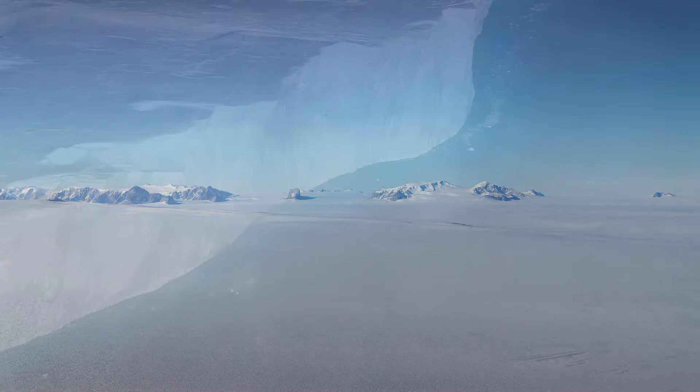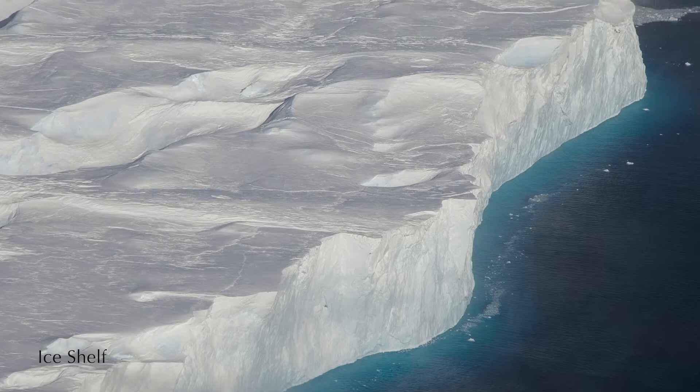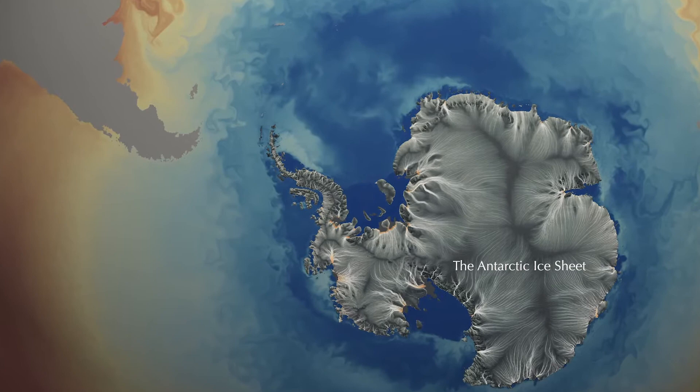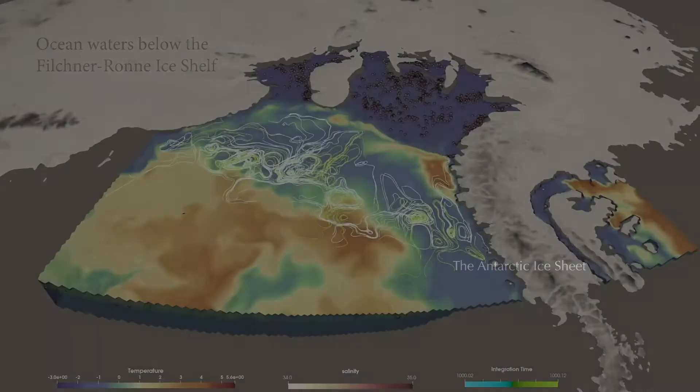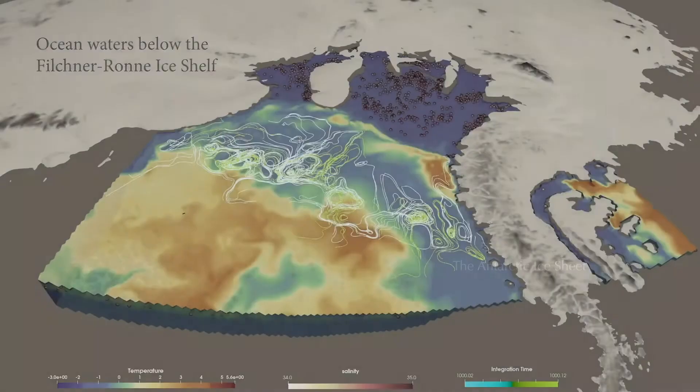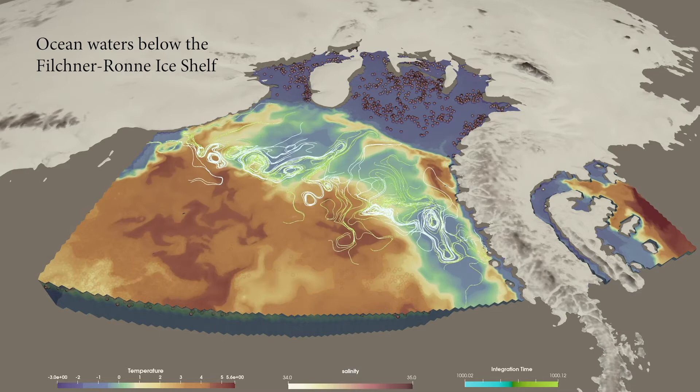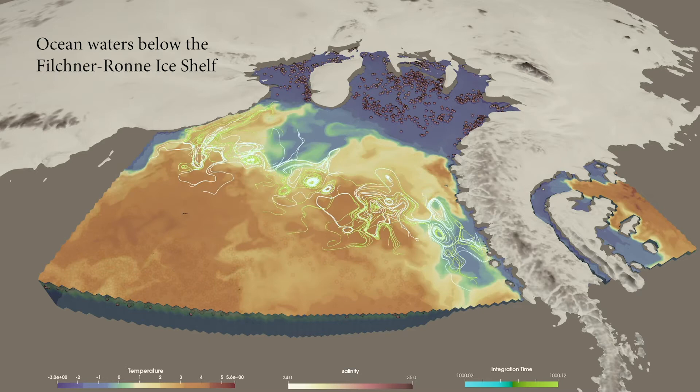Ice shelves are extensions of the ice sheet that float atop the surrounding water and play a role in the thinning of Antarctica's ice sheets. Scientists need to understand the precise mechanisms of ice sheet thinning and its resultant sea level rise in order to create comprehensive global climate models. Using the power of supercomputers, we can enable scientists to model these highly complex systems with numerous variables like never before, increasing our understanding of our relationship with Earth's climate.